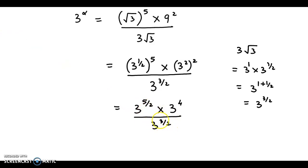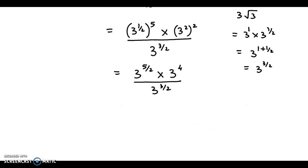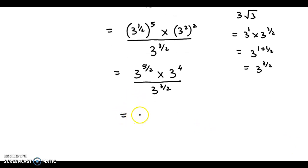Now if we combine these three terms over here, let us see what we get. This could be combined as 3 raised to 5 by 2 plus 4. Here we are using the laws of indices and here we have minus 3 by 2.